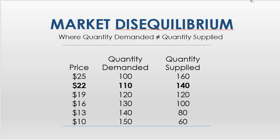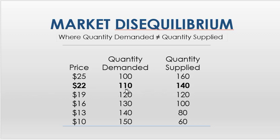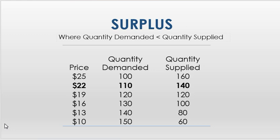Sometimes we're going to have a price that's not the equilibrium price. So let's say we're at a price of $22 in this table. At $22, the quantity demanded is 110 — that's how much people want to buy — but quantity supplied is 140. So more people want to sell than want to buy. When we have that situation, we have what we call a surplus, where quantity supplied is greater than quantity demanded because the price is above equilibrium.